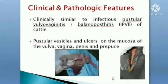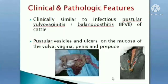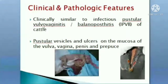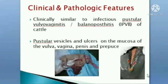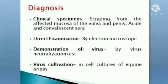The incubation period is 2 to 10 days. Clinically it is similar to infectious pustular vulvovaginitis or balanoposthitis of cattle, resembling bovine herpesvirus 1 infection. Partial vesicles and ulcers on the mucosa of the vulva, vagina, penis, and prepuce can be noticed.